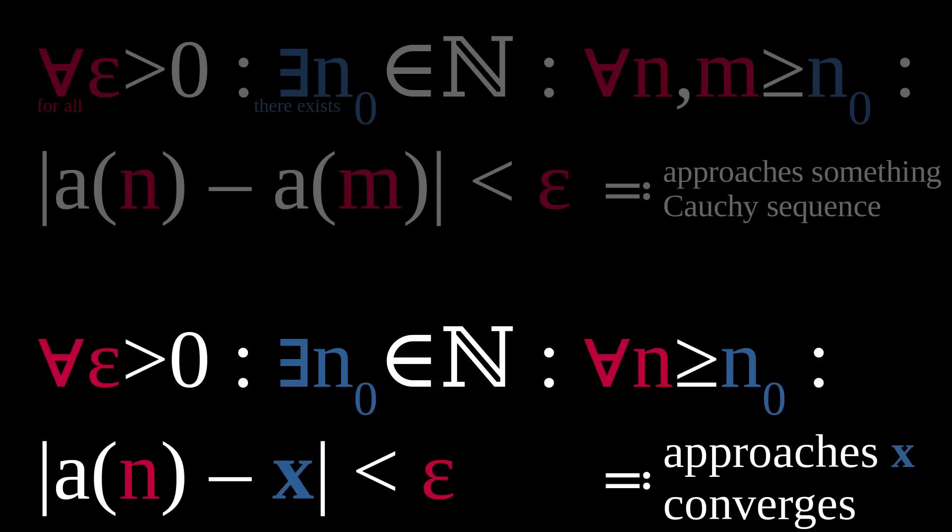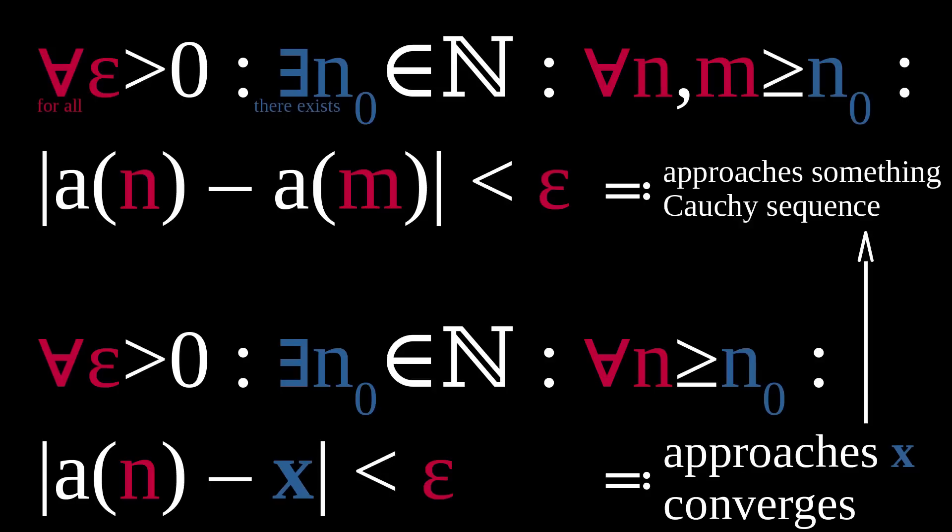Even without worrying too much about the actual definitions, it's easy to see that the first claim automatically follows from the second. Because of the way distance works, if the values of a sequence approach a specific value, they must also approach each other. What about the other direction? Does every Cauchy sequence converge?